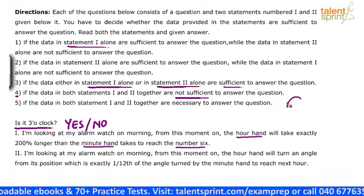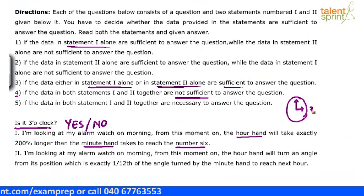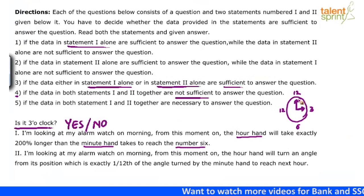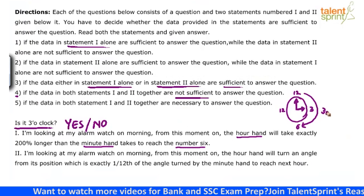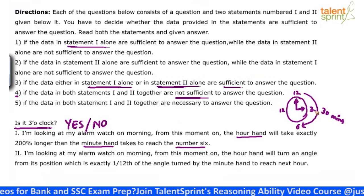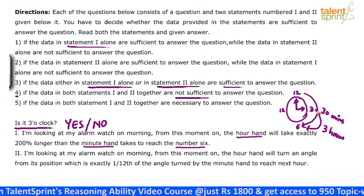An easier way to verify this would be to look at your watch. Let's assume that it is actually 3 o'clock. At 3 o'clock, the hour hand is pointing towards 3 and the minute hand is pointing at 12. From this moment, the hour hand will take exactly 200% longer than the minute hand to reach number 6. How much time will the minute hand take to reach number 6? The minute hand is at 12, so it would take 30 minutes. For the hour hand, which is pointing at 3, to reach number 6, it will take 3 hours.